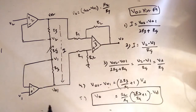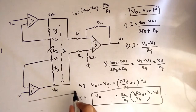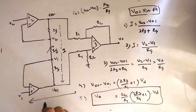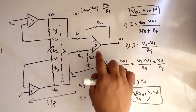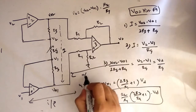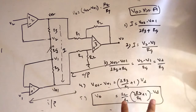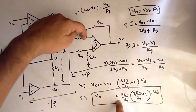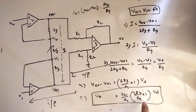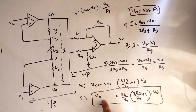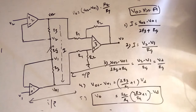Op-amps 1 and 2 form the input stage and op-amp 3 forms the output stage. The resistances are from two sides: these resistances are from the output stage and these resistances are from the input stage. Overall, this expression is the total gain A, so VO equals A into VD.